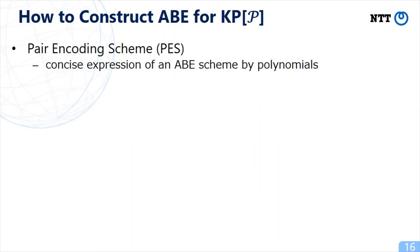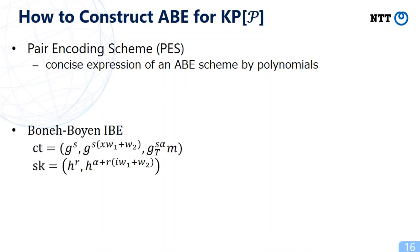I have explained how to obtain the predicate KP of P. Next, I will explain how to construct a concrete ABE scheme for the predicate KP of P. To explain it, I will recall a pair encoding scheme. A pair encoding scheme is a concise expression of an ABE scheme by polynomials.